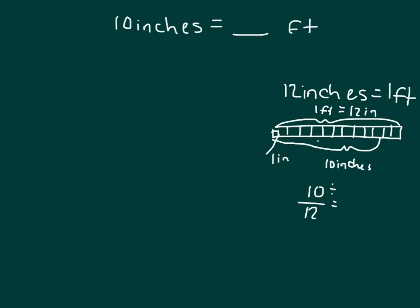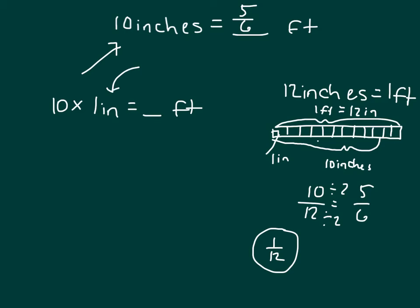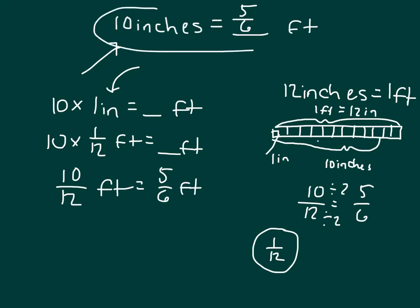If we divide by 2, we get 5 over 6. So 10 inches equals 5 sixths of a foot. Each of those inches, each of those units was 1 twelfth of a foot. So if we worked our problem here, it would have been 10 times 1 inch equals blank foot. And we know that that inch is actually 1 twelfth of a foot. So it's 10 times 1 twelfth of a foot equaling blank feet. And just as before, that's 10 twelfths of a foot which equals 5 sixths of a foot. So 10 inches equals 5 sixths of a foot.